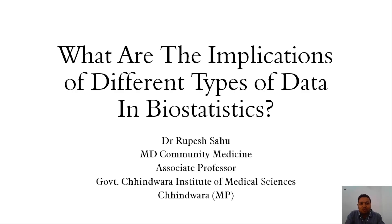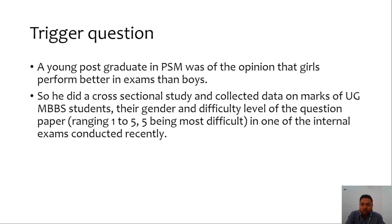Hello and greetings from IAPSM eConnect biostatistics team. The topic of today's discussion is: what are the implications of different data types in biostatistics? We will be dealing with this topic with the help of a scenario so that a better understanding develops and people can relate with it. The trigger question is: a young postgraduate in PSM was of the opinion that girls perform better in exams than boys. He did a cross-sectional study and collected data on marks of undergraduate MBBS students, their gender, and difficulty level of the question paper, which ranged from one to five — five being the most difficult and one being the easiest.